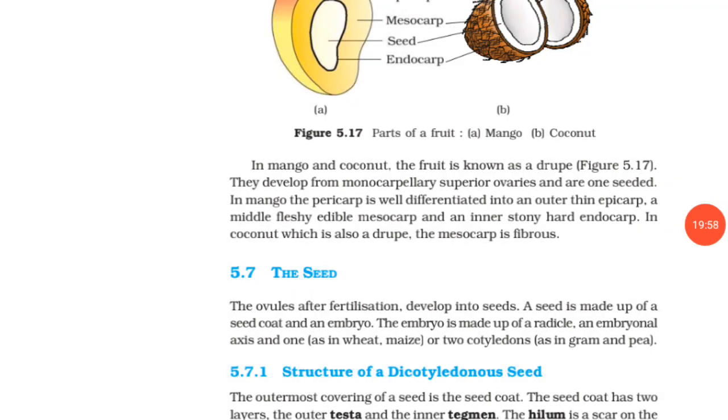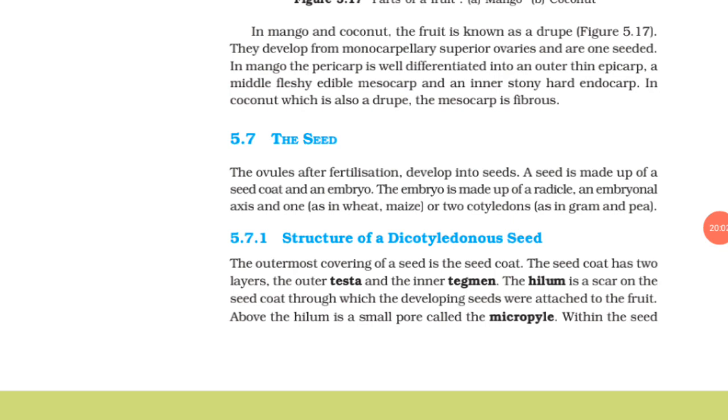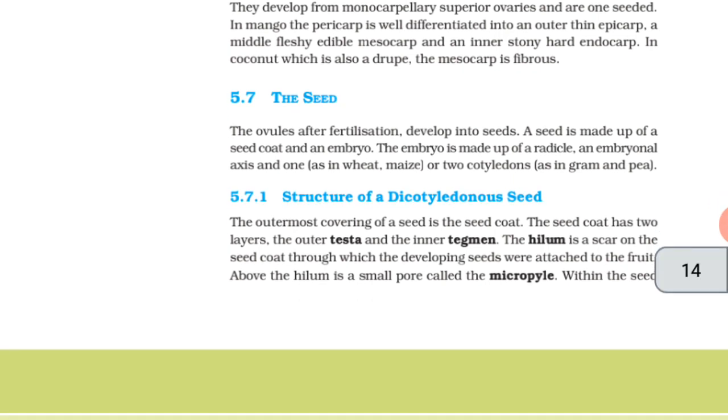The seed. The ovules after fertilization develop into seeds. A seed is made up of a seed coat and an embryo. The embryo is made up of a radicle, an embryonal axis and one as in wheat, maize, or two cotyledons as in gram and pea. Structure of dicotyledonous seeds. The outermost covering of a seed is the seed coat. The seed coat has two layers, the outer testa and the inner tegmen. The hilum is a scar on the seed coat through which the developing seed was attached to the fruit.